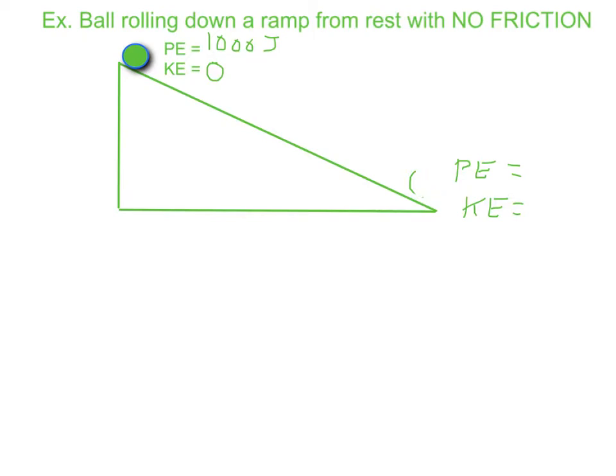By the time it gets to the bottom, we can say that the potential energy is zero because M times G times H, no matter what the mass is, no matter what planet you're on, if the H is zero we would say the potential energy is zero. So the kinetic energy has to be a thousand joules.